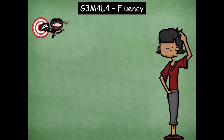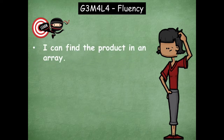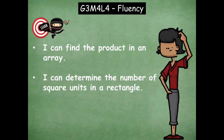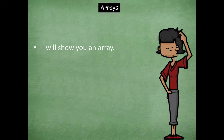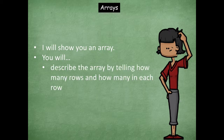Hey boys and girls, I'm SysWalker. Today for our fluency lesson we are going to work on three activities. Let's look at our 'I can' statements. The first one is: I can find the product in an array — you'll look at an array and tell me the product. The second is: I can determine the number of square units in a rectangle. And the final one is: I can skip count by sixes, sevens, eights, and nines. So let's jump in and get started with arrays.